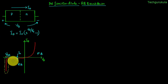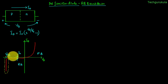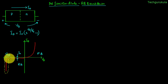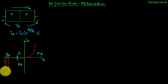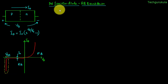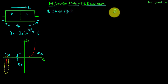This graph tells us that if we keep increasing the reverse bias voltage, the diode doesn't conduct — until at some point the diode breaks down and allows current to flow through it. In this video, we will see why this breakdown happens and what are the different mechanisms that make it happen. Reverse breakdown can occur because of two mechanisms: one, the Zener effect, and two, the avalanche effect.